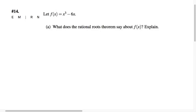f(x) equals x to the third minus 6x. Notice that because the constant term in this polynomial is zero, we actually can't apply the rational roots theorem to it. It doesn't tell us anything about whether the roots are rational or not. It just says nothing altogether.